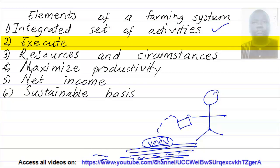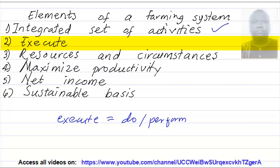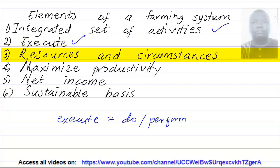Next point: execute. When I say execute, execute means do, perform, and also implement. As a farmer, you have to do the various activities that are expected of you in a farming system. Execute is an action, something a farmer has to do.